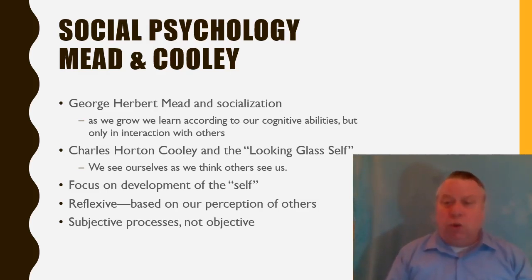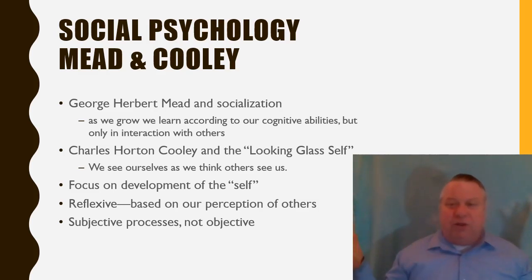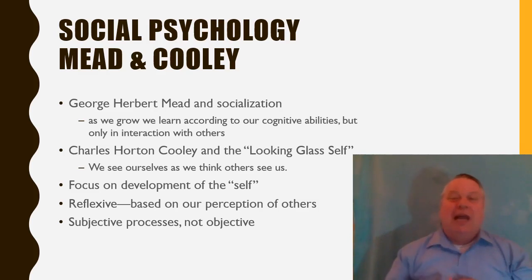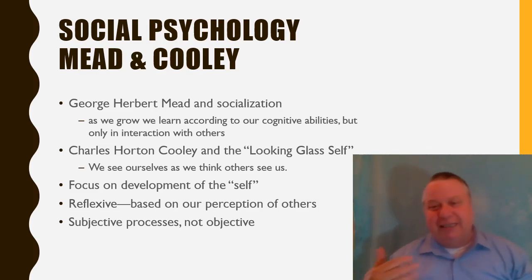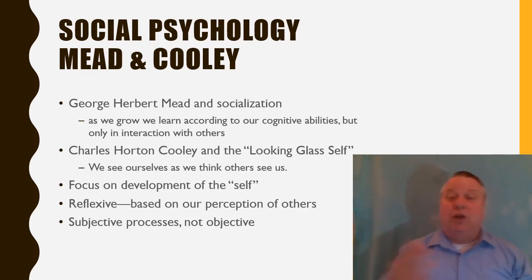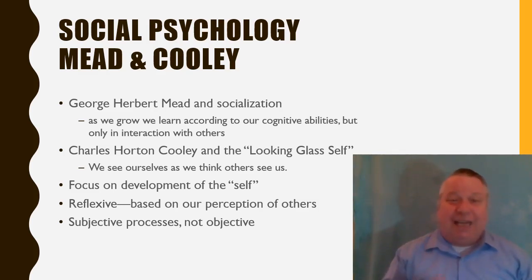Charles Horton Cooley developed a concept very similar to symbolic interactionism called the looking glass self. Now, looking glass means mirror. So — you know how you look — well, how do you know how you look? You can never actually see yourself; your eyes are here, so you can't look at yourself except through a mirror. Of course now I can see myself on the camera and see how handsome I am. So when we look in the mirror, we say to ourselves, hmm, that guy is very handsome, right? Not exactly — because how do we know what is handsome?